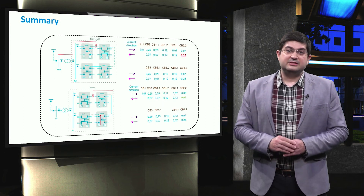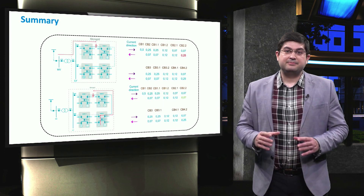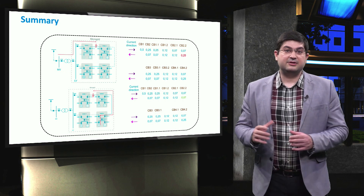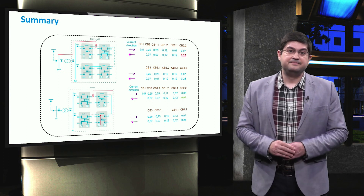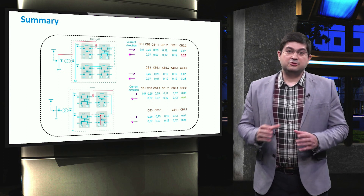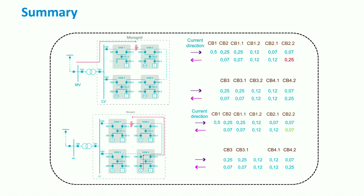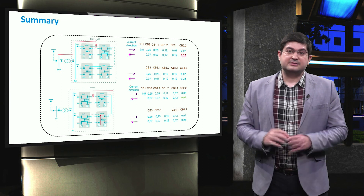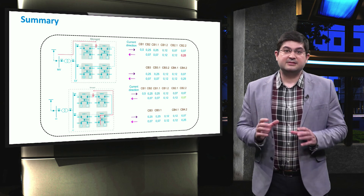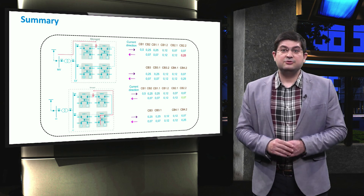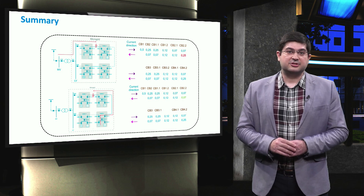In this video, we discussed an example of adaptive protection for a microgrid in the grid-connected mode. We showed that once the configuration of the network changes, a selectivity problem may occur. To avoid this, the time setting of the relays is adjusted using adaptive protection.